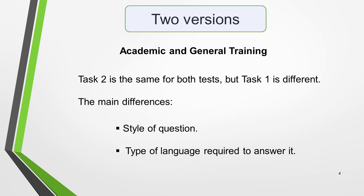There are two versions of the writing test: academic and general training. Task 2 is the same for both tests but task 1 is different. The main difference is in the style of question and the type of language required to answer it. We'll look at the details in the next few slides.